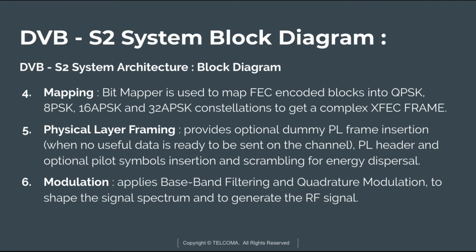At the mapping stage, the bit mapper maps the FEC-encoded block into QPSK, 8PSK, 16APSK, and 32APSK constellations to obtain a complex XFEC frame. This is followed by the physical layer framing stage.